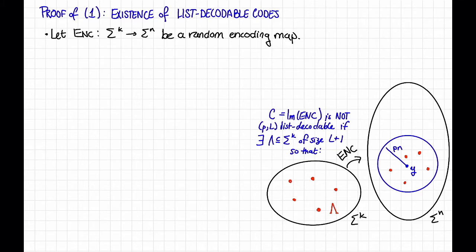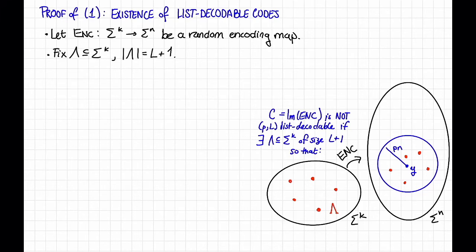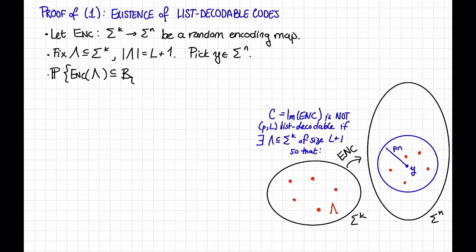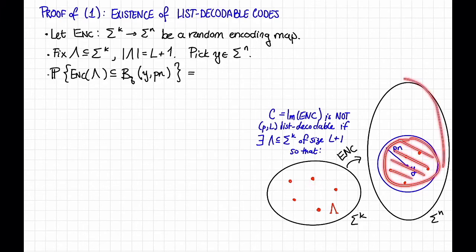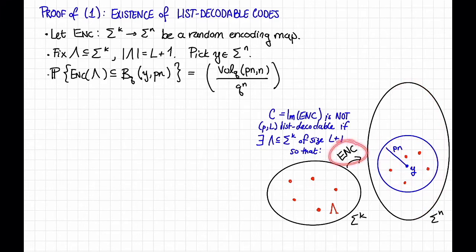So we're going to compute the probability over this random encoding that this happens, then show that it's unlikely to happen for any lambda — meaning the code is list decodable with high probability. Let's fix such a lambda and pick such a y. The probability that the encoding of the set lambda lives in the Hamming ball about y of radius p·n: the probability that any one point ends up in this ball is just the volume of the ball divided by the volume of the whole space. Since the encoding map is completely random, all these events are independent, so we raise this probability to the L+1.